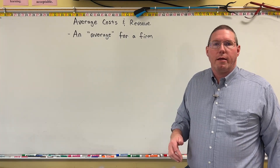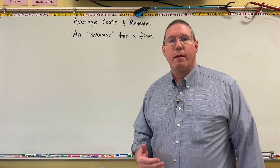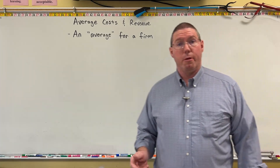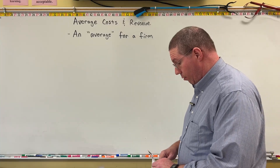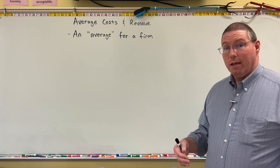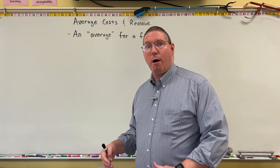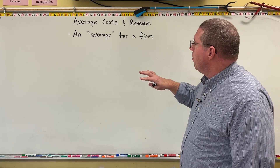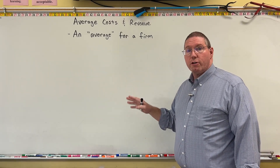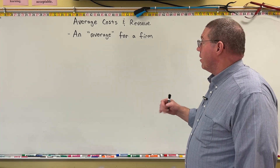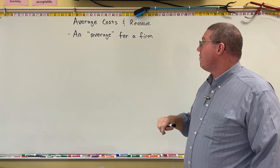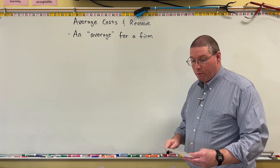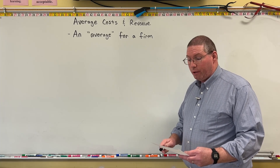We are continuing our understanding of profit maximization for firms. So far we have learned about nine variables, and we're about to learn about our last three variables, which are averages. We're going to wrap up this understanding of 12 variables, and then get an understanding of how a business can maximize their profit. The important variables we're going to talk about in this video are average costs and revenue. An average for a firm is a cost or revenue that is divided over each unit of output produced and sold.